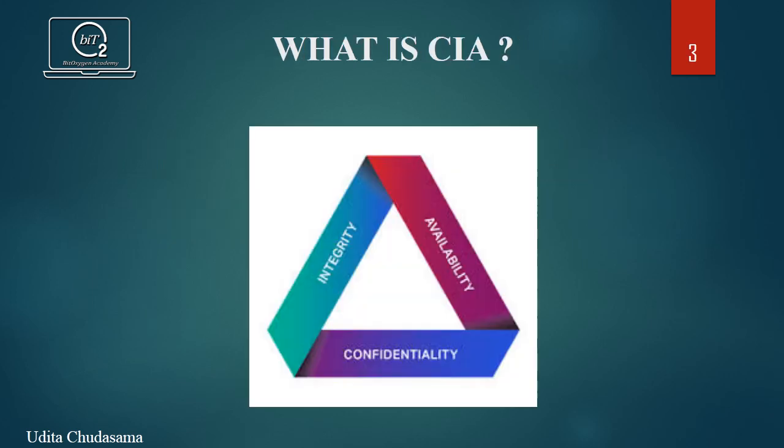What is the CIA triad? CIA is a security model which stands for confidentiality of data, integrity of data, and availability of data. These three key principles should be guaranteed in any kind of security system. If any one of the three principles can be breached, then it can have serious consequences for the communicating parties. This principle is applicable across the whole security system procedure, from access to users' internet history to securing encrypted data across the internet.